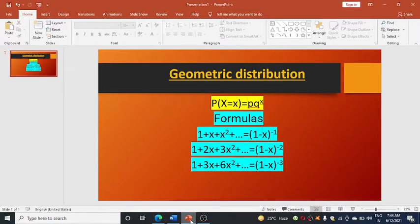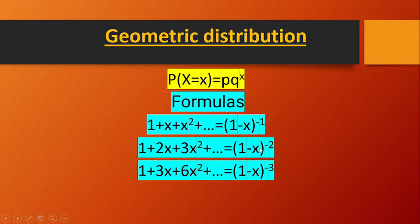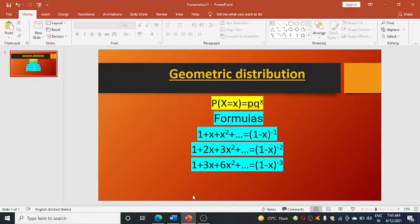Students, let's look at these series formulas. For 1 + x + x² + ..., we write it as (1 - x)^(-1). For 1 + 2x + 3x² + ..., we write it as (1 - x)^(-2). Similarly, for 1 + 3x + 6x² + ..., we write (1 - x)^(-3). The coefficient of x gives the power with a negative sign.